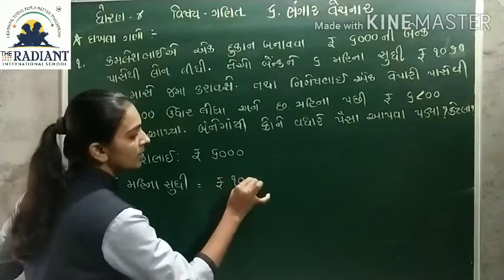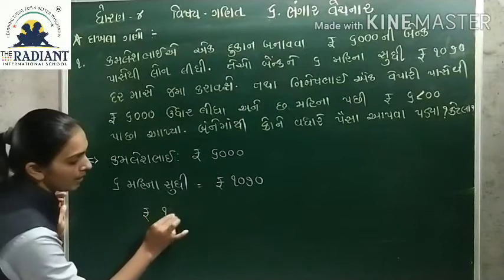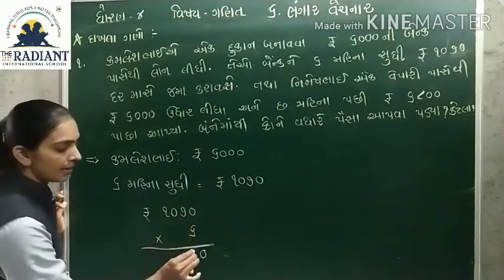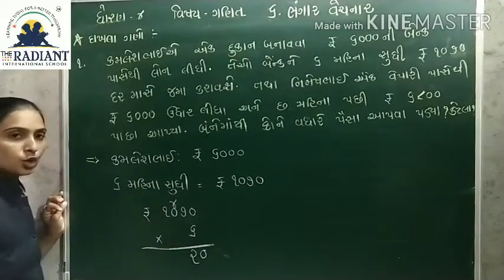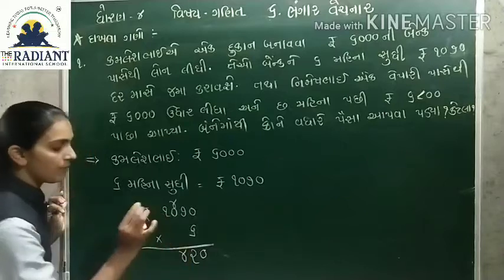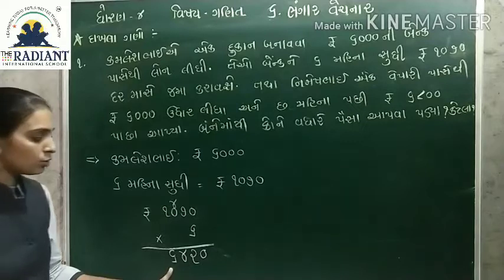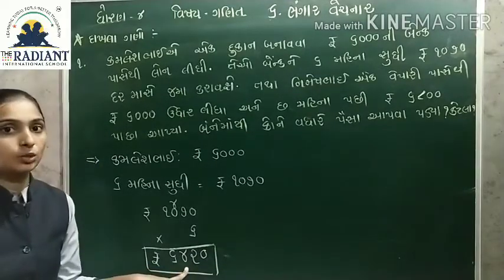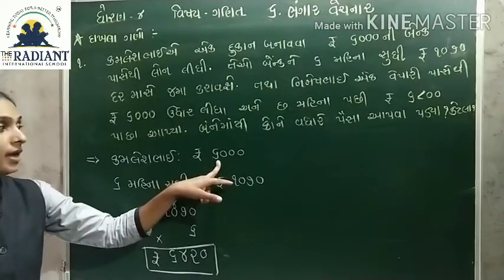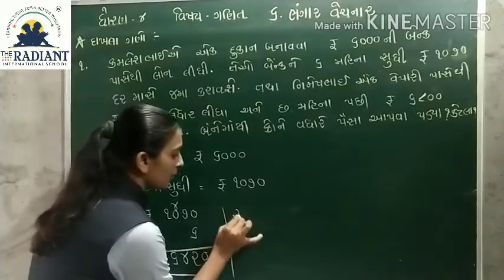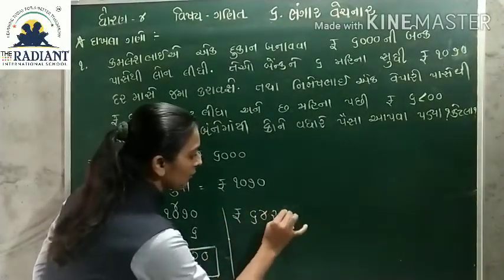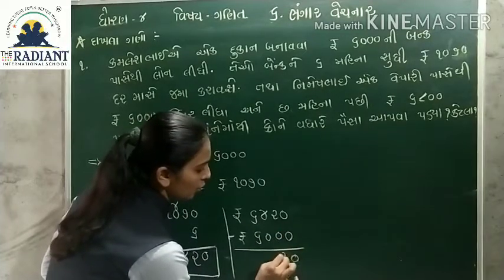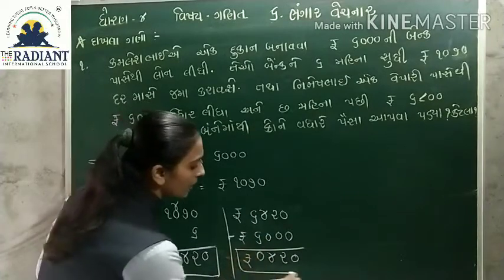રૂ. 1,070 ચૂકવે છે, તો કેટલા થશે? રૂ. 1,070 ગુણ્યા 6 = ? ગુણાકાર: 0 ગુણ્યા 6 = 0, 7 ગુણ્યા 6 = 42, 1 ગુણ્યા 6 = 6 ને 4 ઉમેરો = 10. એટલે ટેમને 6,420 રૂ. બેંકને ચૂકવ્યા - 6,420 રૂ.